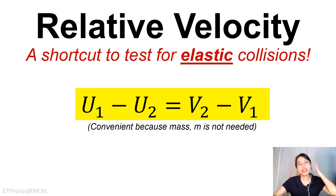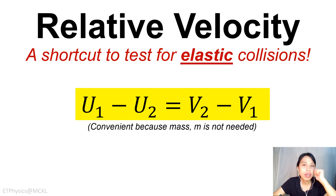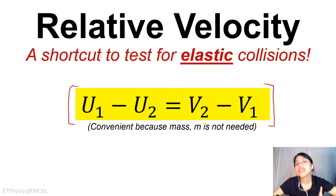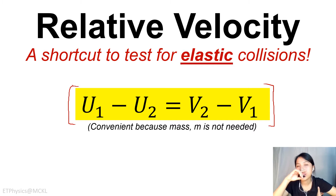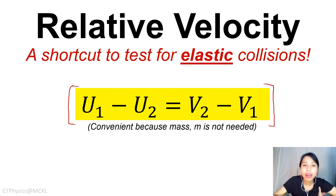Hello there. Today we're going to take a quick look at the relative velocity equation — U1, U2, V2, V1. This is actually a shortcut to calculate velocities of objects before and after a collision.